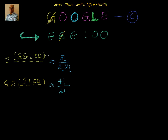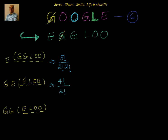After G, E is over, I will move to G, G. Again I will repeat the same thing — all the words starting with G, G. G, G is fixed, and I have to take care of four slots. Those need to be filled with E, L, O, O. How many ways? There are four letters, factorial 4, and O is repeating two times, so factorial 4 divided by factorial 2.